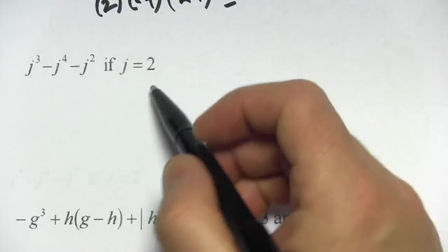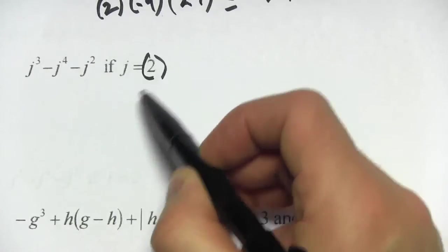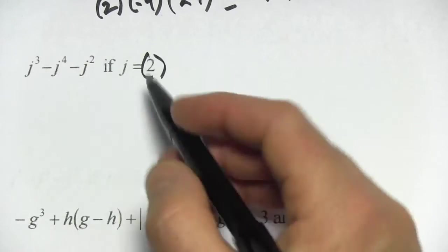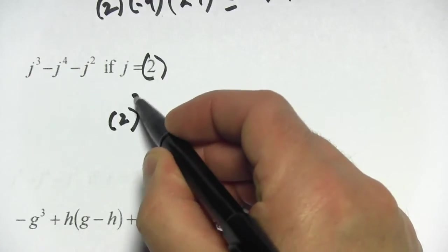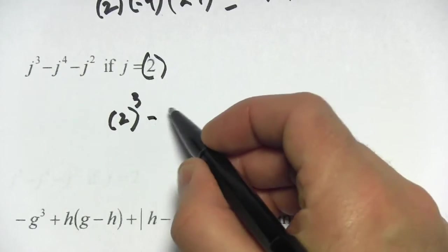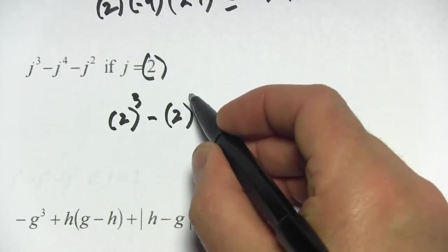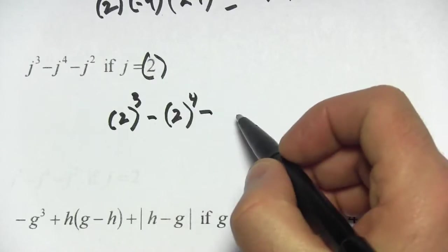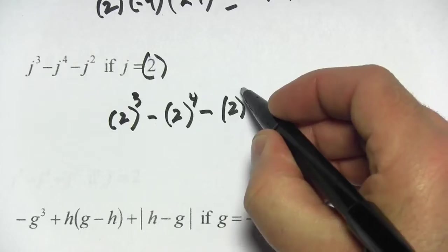Let's try another. Here we just have one variable, j is 2. So let's plug that in. First we have j which is 2 to the third power, then a minus sign, then we have j to the fourth, and a minus sign and j to the second.